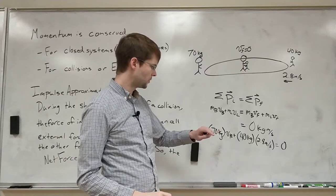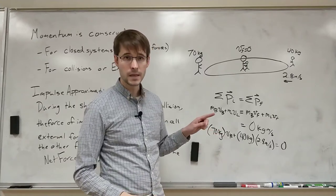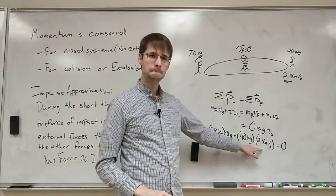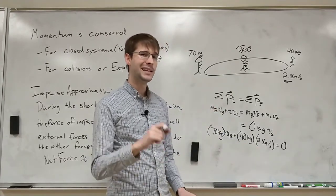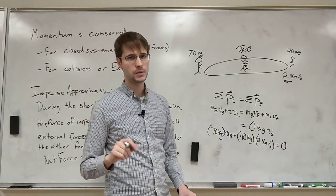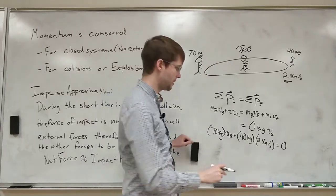But before we go I just noticed I actually made a mistake in this. We're going to consider to the right the positive direction. So the little brother's velocity is actually negative 2.8 meters per second because he's moving to the left.